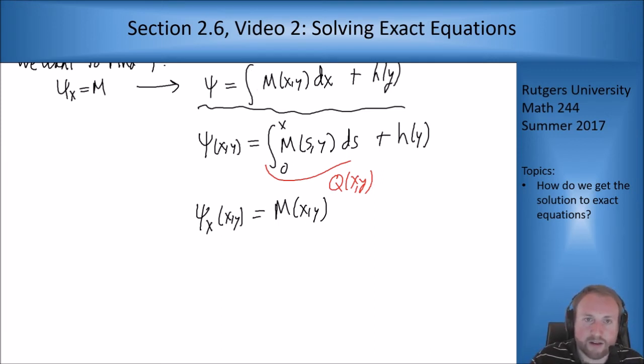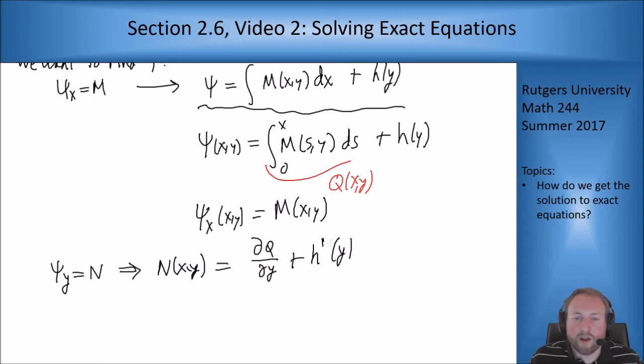So now I want that ψ_y is equal to N, which means I want N(x,y) to equal the y derivative of this side. So ∂q/∂y + h'(y). Now in order for this to work, I'm supposed to find what h is. If I can find h, then I'm all set. Which means I want to be able to solve h'(y) = N(x,y) - ∂q/∂y(x,y).